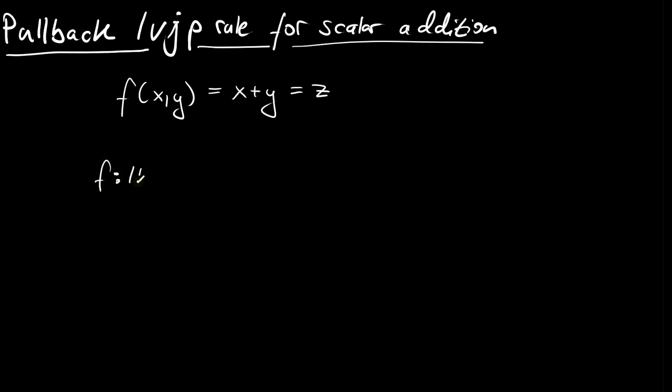So it is a function that takes a scalar times a scalar and produces a scalar. Now we are interested in backpropagating cotangent information, so we are given cotangent information on the output z and want to transfer it back to the input x as well as to the input y.